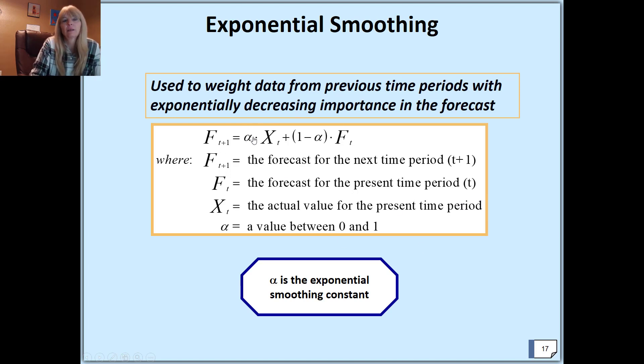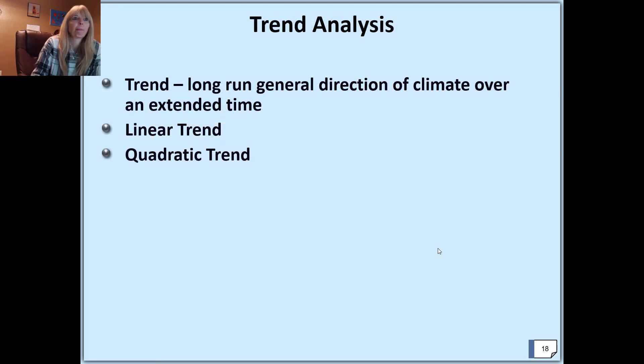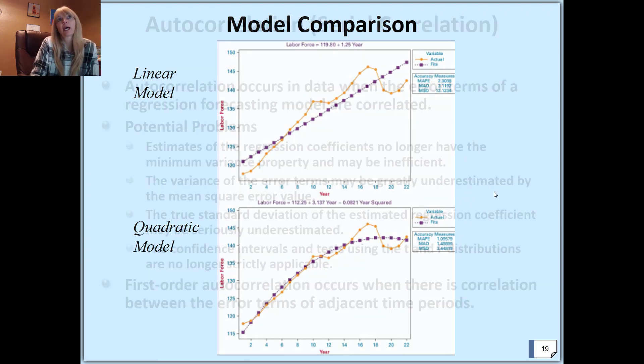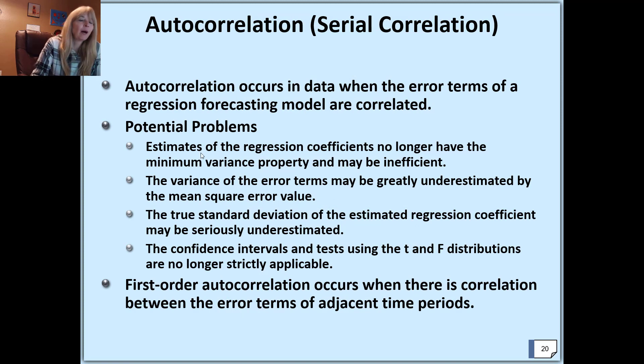Then we look to see overall trends. We look for linear trends and quadratic trends. Sometimes the linear model may not fit as well as the quadratic model. I always say graph the data, graph the data. Once again, we look at actual errors.